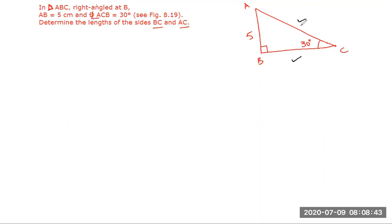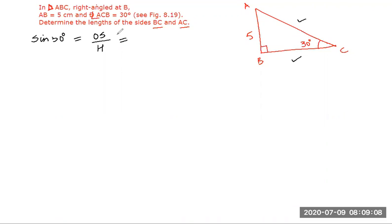How can we do this? We know the trigonometric ratios, so you can apply any one. For example, you can apply sine 30 degrees equals opposite side by hypotenuse. Now, the opposite side of the 30-degree angle is 5 centimeters, which is given, and the hypotenuse is not given — that is AC.